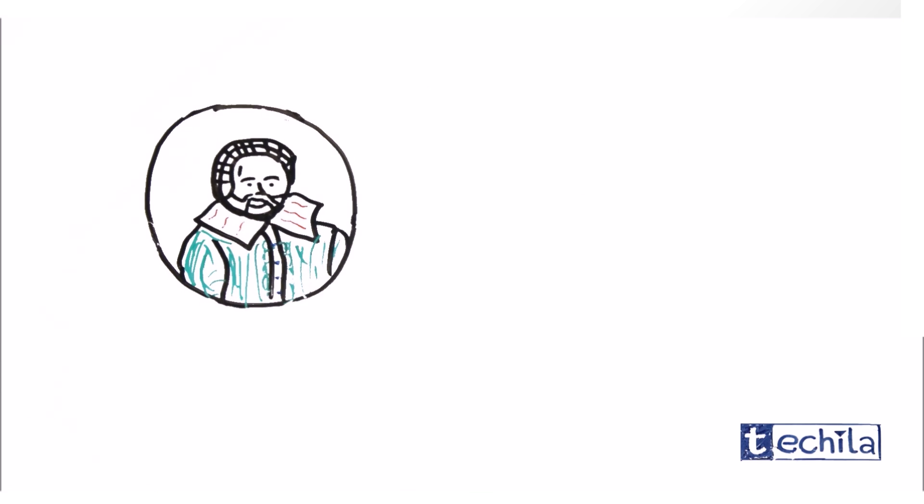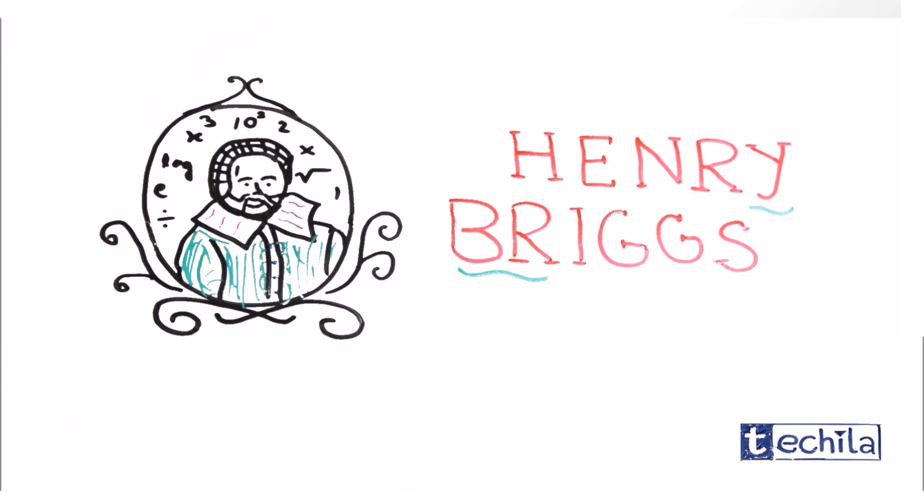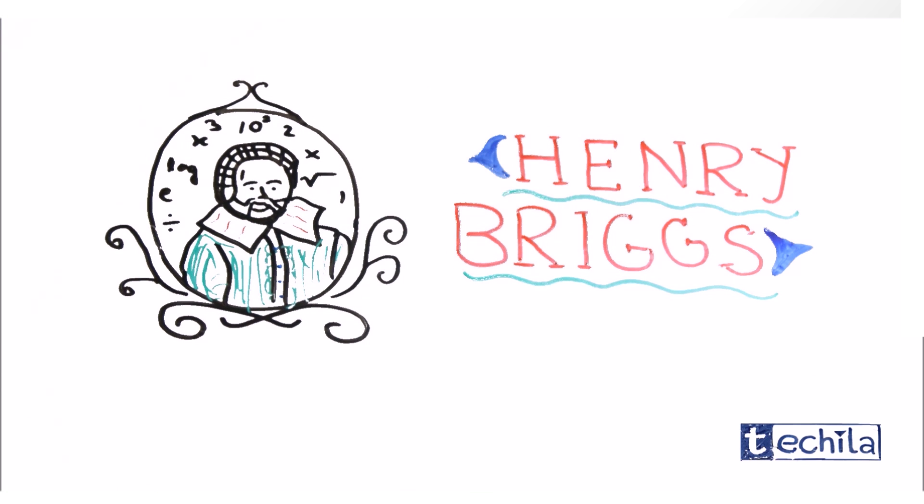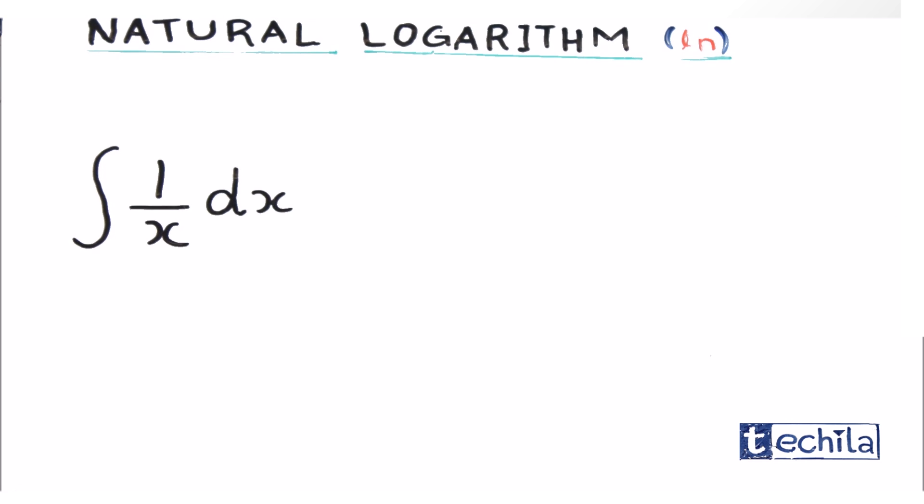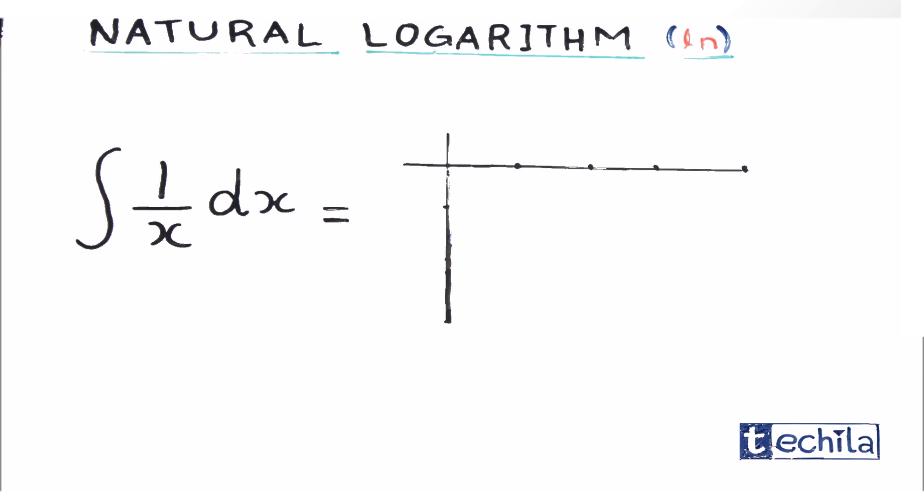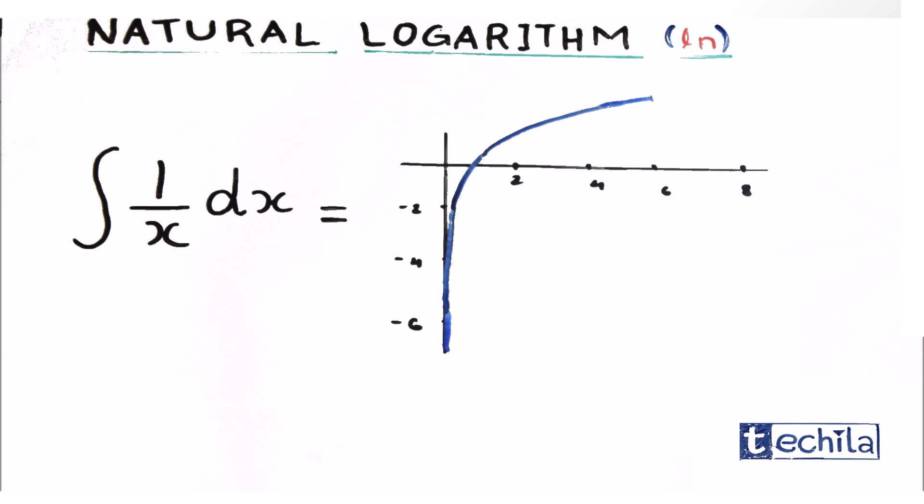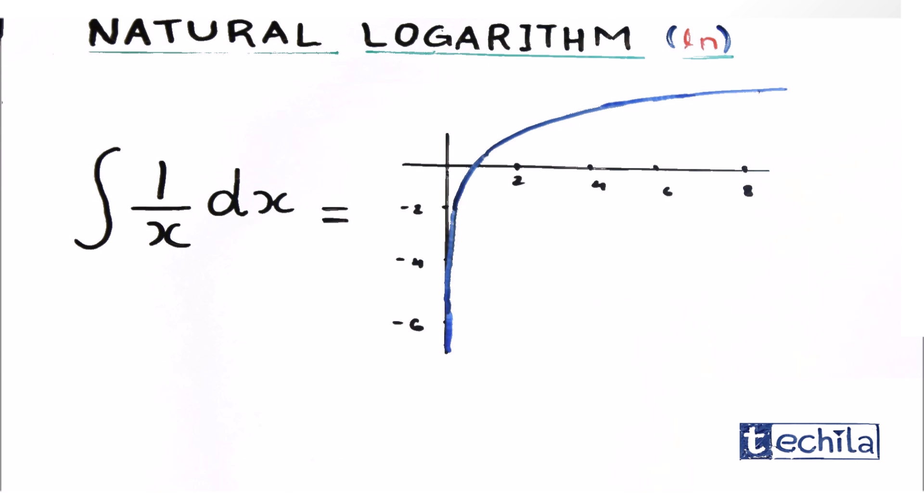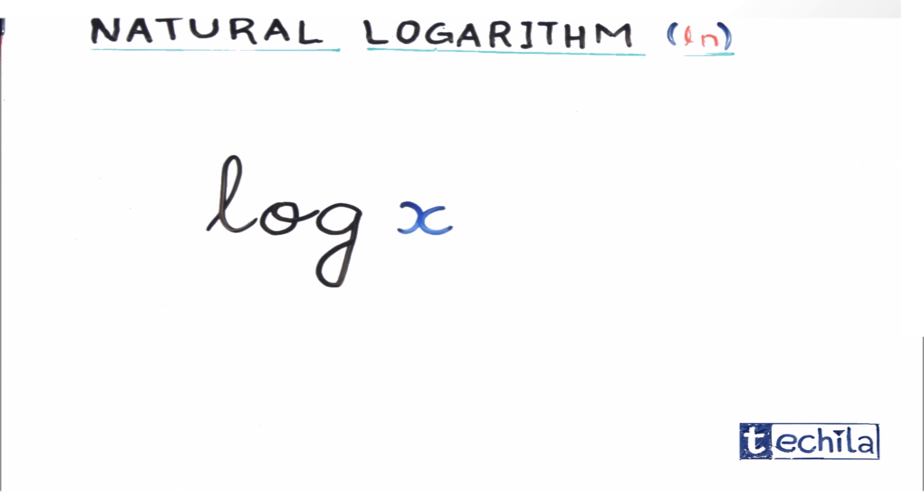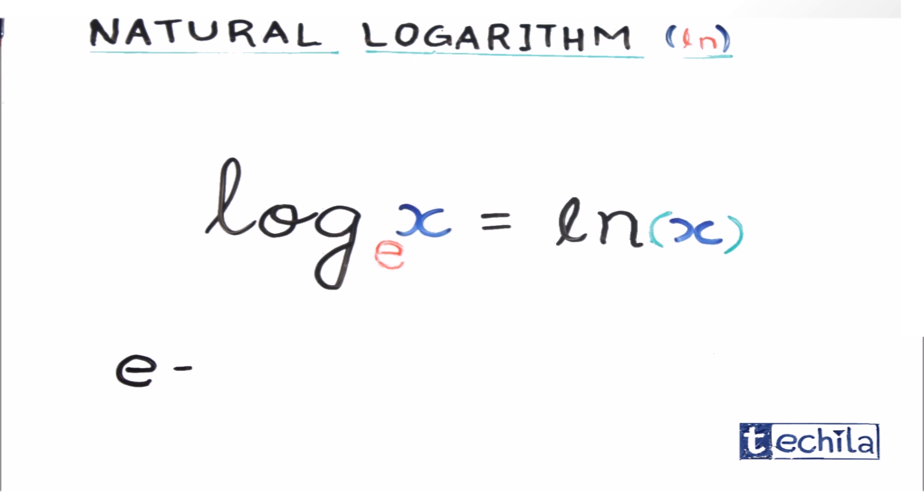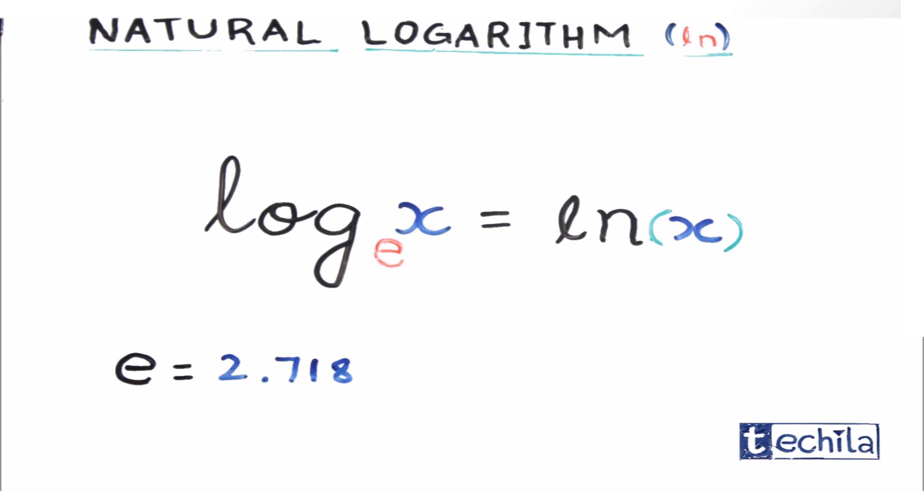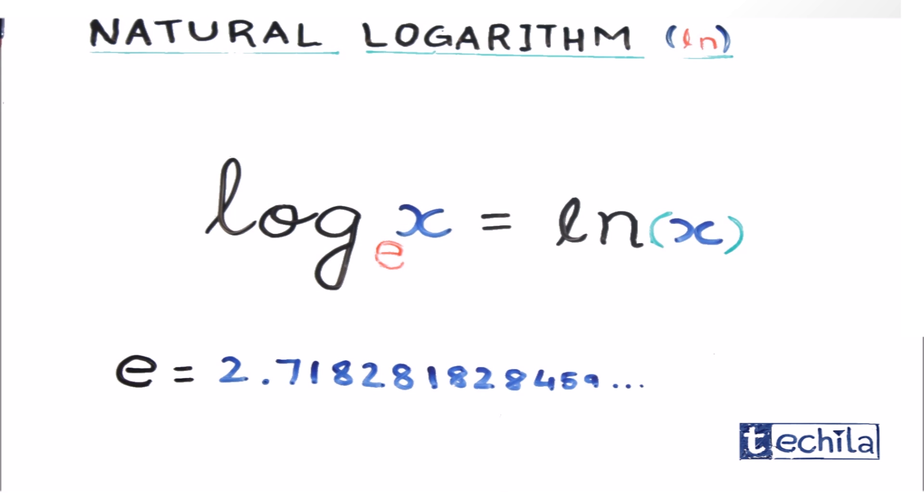This idea was suggested by an English mathematician Henry Briggs. Also, after a couple of years, few mathematicians observed that the integral of 1 by x followed the properties of logarithm and showed similar graphical behavior. This logarithm is known as natural logarithm, and its base was found to be a constant value, that is e equals 2.718281828459, and so on.